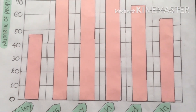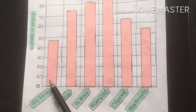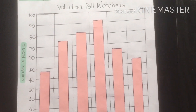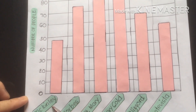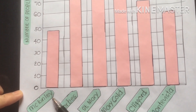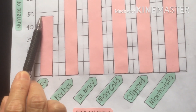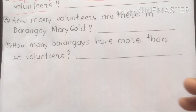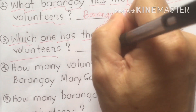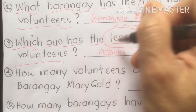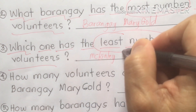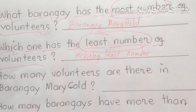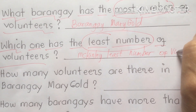Looking at our bar graph, the lowest number of volunteers is none other than Mackinley. The number of people who volunteered in Mackinley barangay is 48. So Mackinley is the barangay with the least number of volunteers.